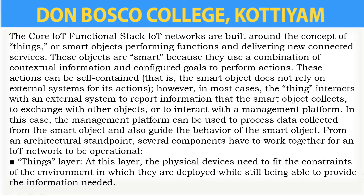The core IoT functional stack networks are built around the concept of things, that is objects — smart objects. This core IoT functional stack consists of three different layers: the first is the things layer, which means smart objects like sensors and actuators; the next is the communication network; and the third one is the applications layer.